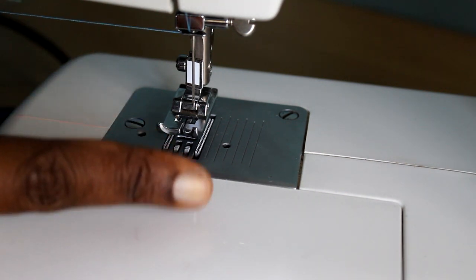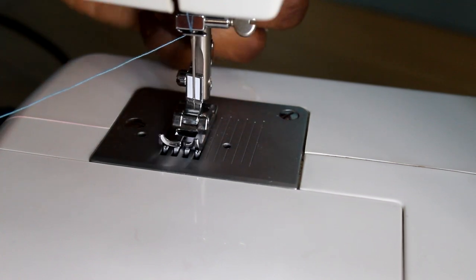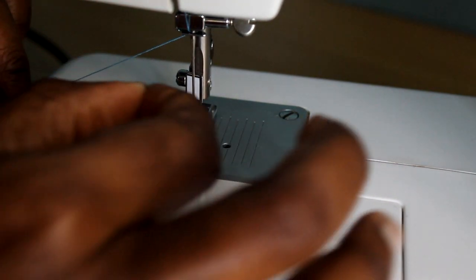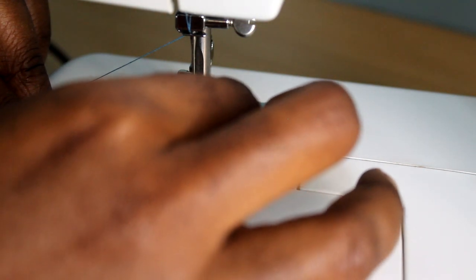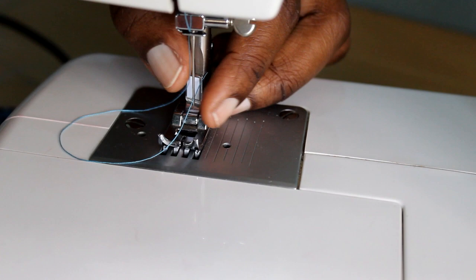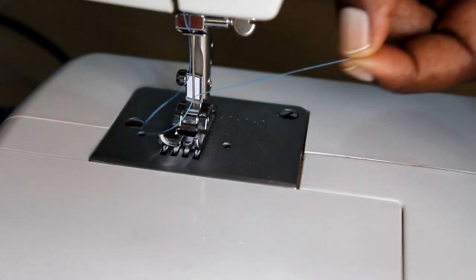Now my machine threads from front to the back. Let me see if I can quickly do that. I'll put the presser foot down and pass the thread through the needle. Here we go, and just pull it out the back.